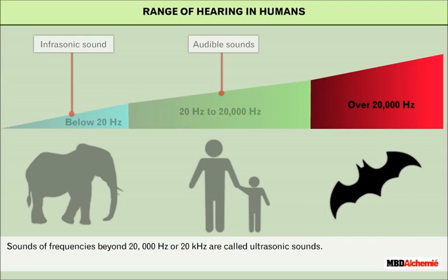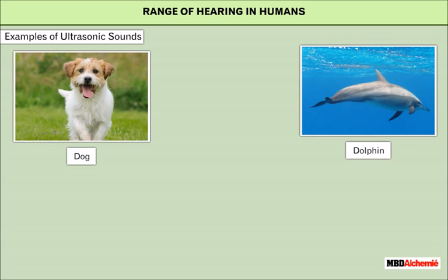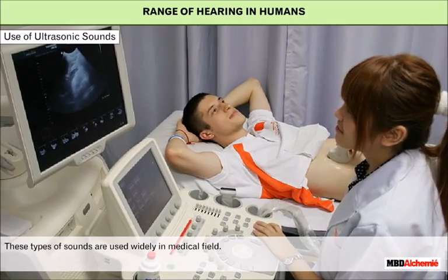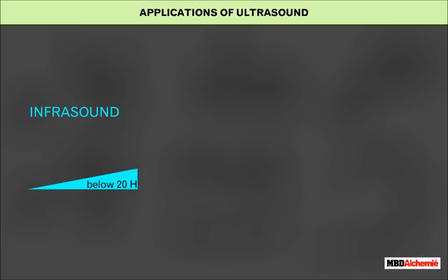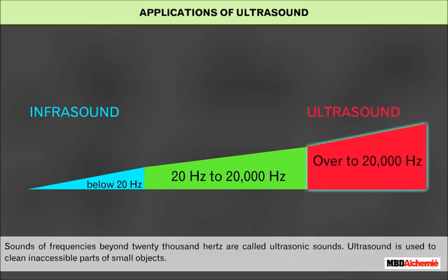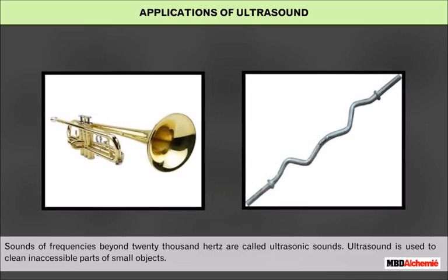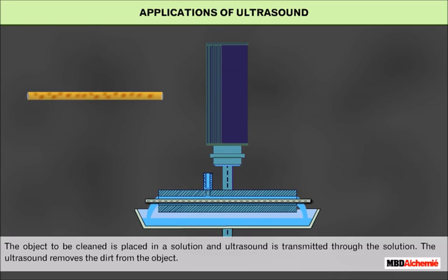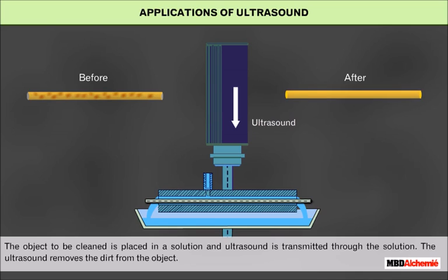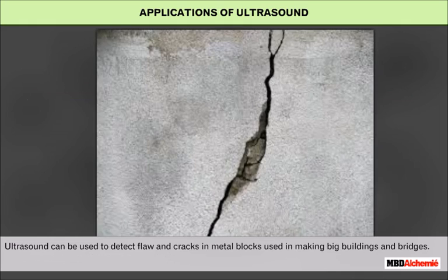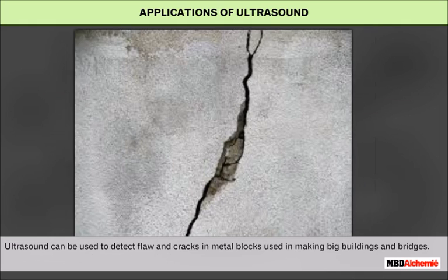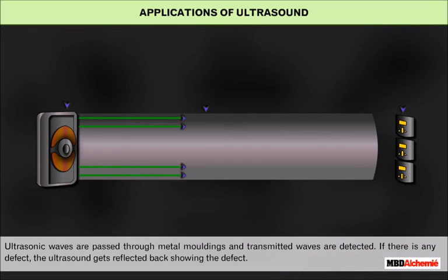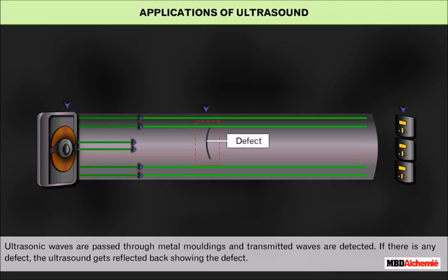Sounds of frequencies beyond 20,000 Hz or 20 kHz are called ultrasonic sounds. Ultrasound is used to clean inaccessible parts of small objects. The object to be cleaned is placed in a solution and ultrasound is transmitted through the solution, which removes the dirt from the object. Ultrasound can also be used to detect flaws and cracks in metal blocks used in making big buildings and bridges. Ultrasonic waves are passed through metal moldings and transmitted waves are detected. If there is any defect, the ultrasound gets reflected back, showing the defect.